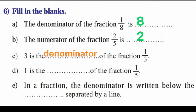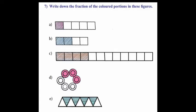1 is the dash of the fraction 1 by 5, that is numerator. E, in a fraction, the denominator is written below the dash separated by a line. Numerator. Seventh main.